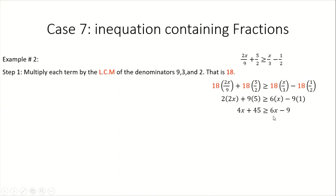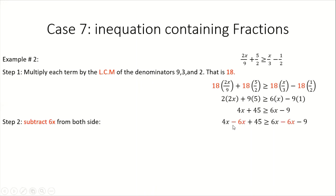We have constants and variables on both sides. We group the x terms on the left by subtracting 6x from both sides: 4x minus 6x plus 45 ≥ 6x minus 6x minus 9. Simplifying: 4x minus 6x gives negative 2x, and 6x minus 6x gives 0, so we have negative 2x + 45 ≥ negative 9.